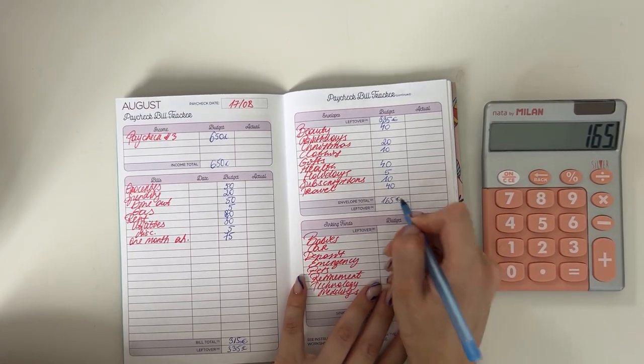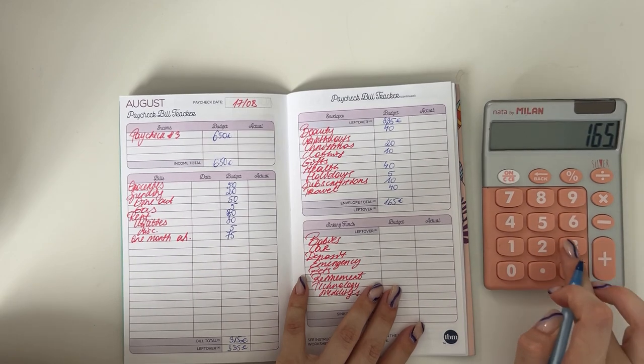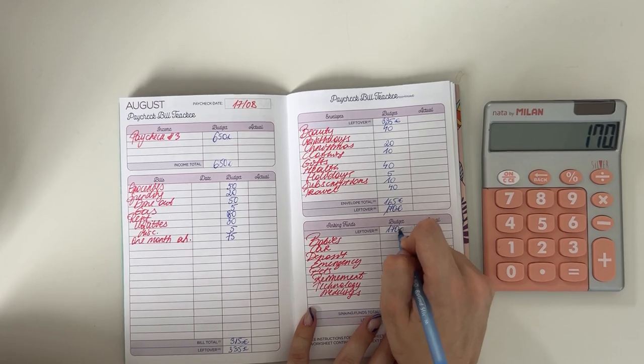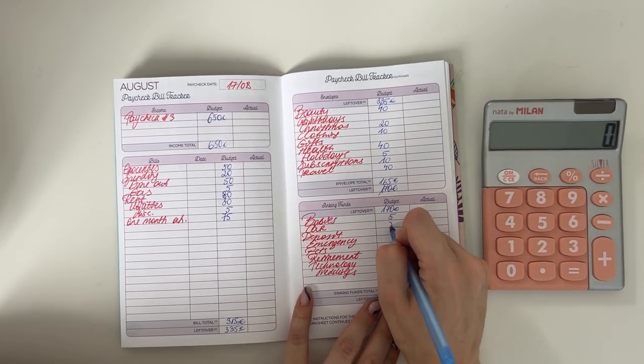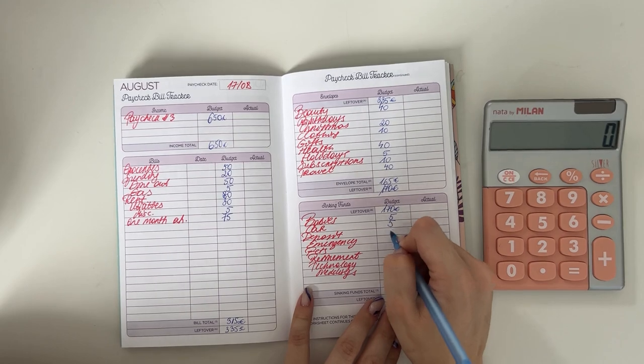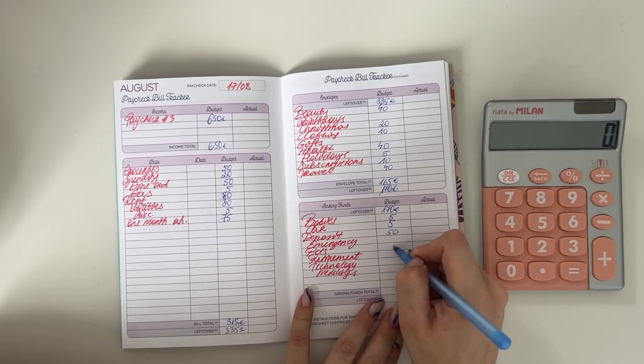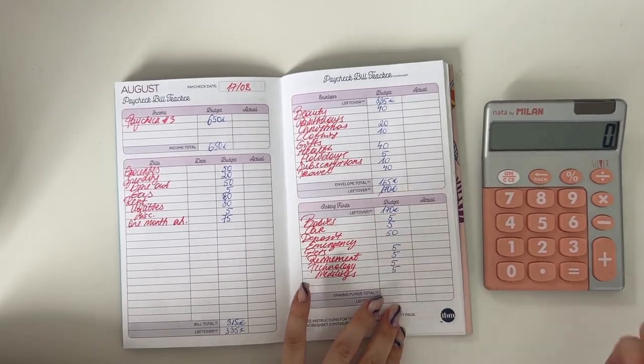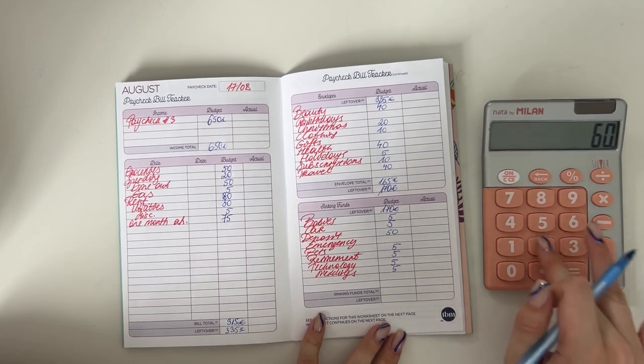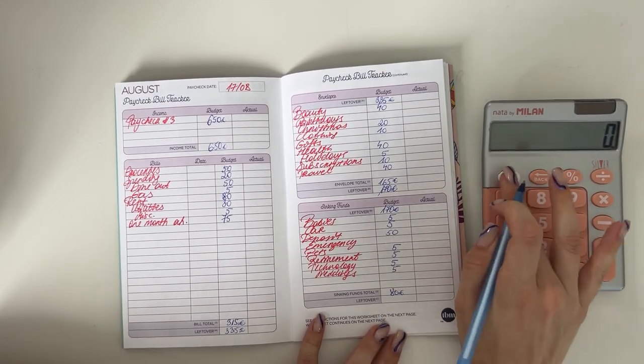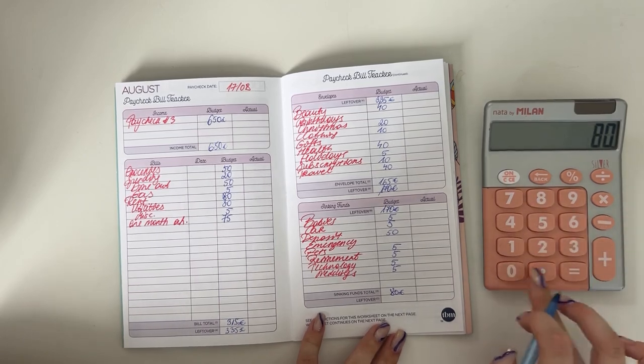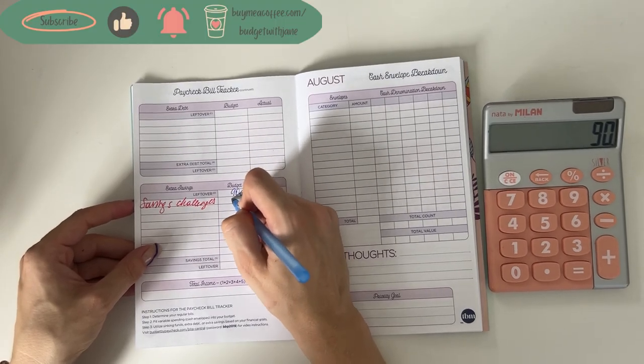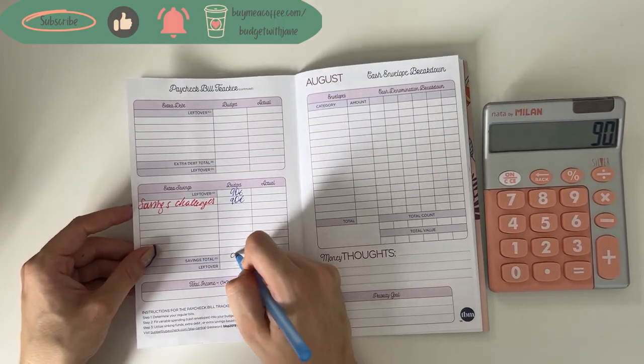So €335 minus €165 is €170. We're bringing that down to long-term sinking funds. We're putting €5 into babies, €5 into car, €50 in deposit, €5 in pets, €5 in retirement, €5 in technology, and €5 into weddings. That's €80 for long-term sinking funds. So €170 minus €80 is €90, and those €90 are all going to our savings challenges, which is super exciting.